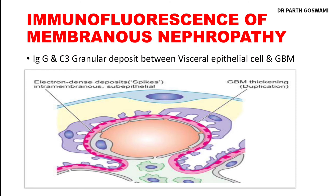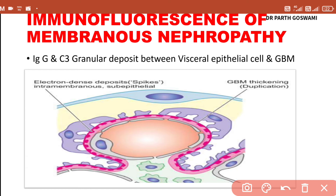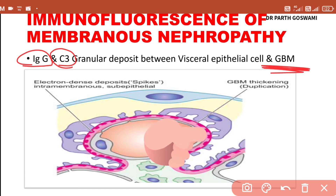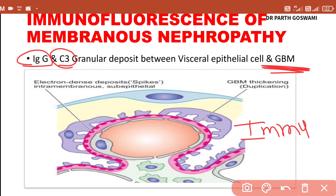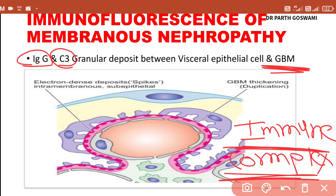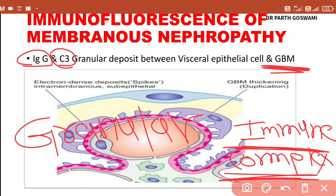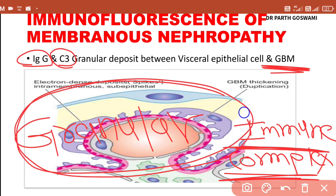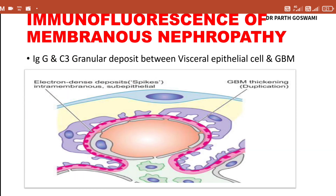On immunofluorescence microscopy, IgG and complement C3 will be deposited in the glomerular basement membrane. Since this condition is immune complex mediated, the immunofluorescence shows a granular appearance of deposition — whenever immune complex deposition is the mechanism, the appearance is always granular. So there will be granular deposition of IgG and complement C3.